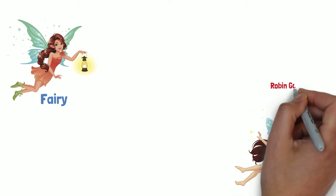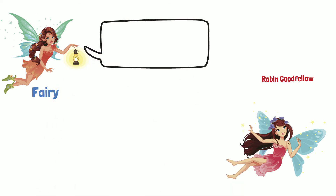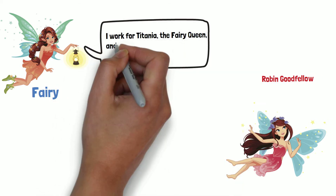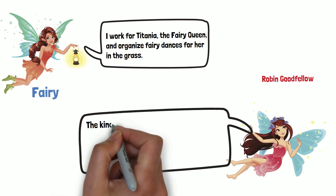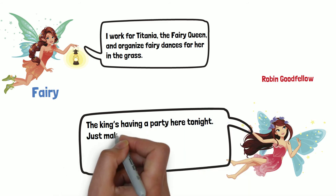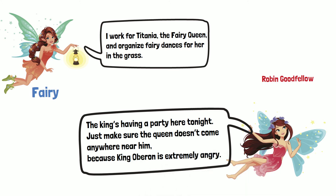Act 2 Scene 1 opens with two fairies: one known simply as the fairy and the other as Robin Goodfellow. The fairy works for queen of the fairies Titania, and her job is to organize fairy dances for the queen. Meanwhile, Goodfellow works for the king of the fairies Oberon. Goodfellow warns the fairy that the king is having a party that very night and it would be wise if Titania was as far away as possible.